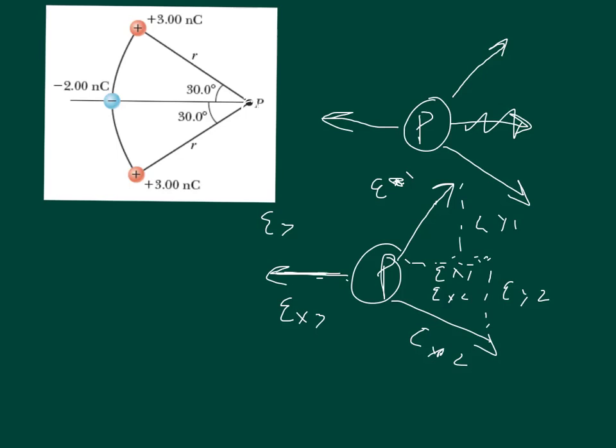So the electric field in the x direction is going to be equal to Ex1 plus Ex2 plus Ex3. In order to figure out what Ex is, we have to solve what E is. So what's the field? What is the electric field of this 3 nanocoulomb charge at 3.76 centimeters away?